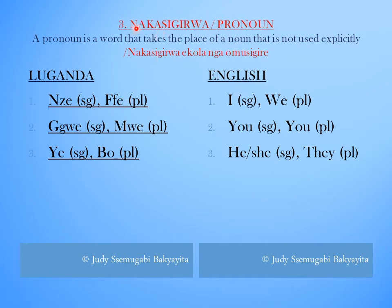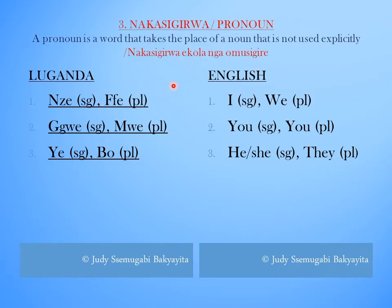The third part of speech is Nakasigira, which is Pronoun in English. A pronoun is a word that takes the place of a noun that is not used explicitly. It is used instead of using a noun.